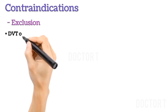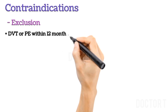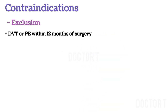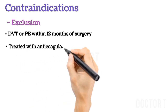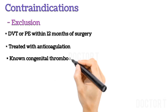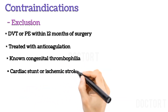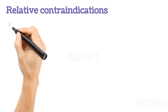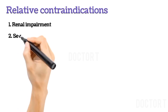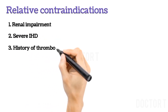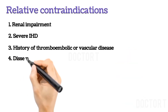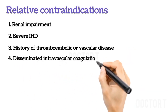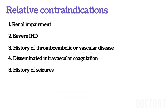Contraindications: DVT or Pulmonary Embolism within 12 months of surgery, History of DVT or PE being treated with anticoagulation, Known Congenital Thrombophilia, Cardiac Stent or Ischemic Stroke within 1 year. Relative Contraindications: Renal Impairment, Severe IHD, History of Thromboembolic or Vascular Disease, Disseminated Intravascular Coagulation, History of Seizures.